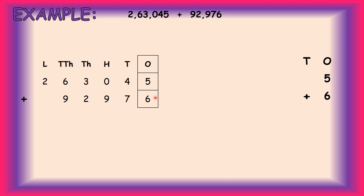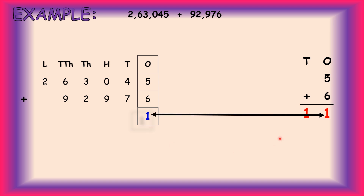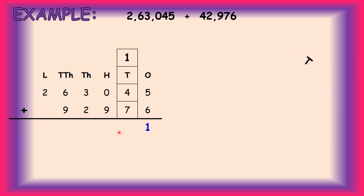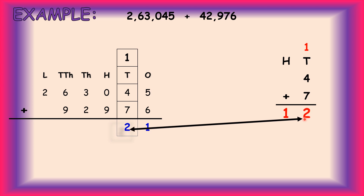Once numbers are placed, we start addition from the ones column. The digits in the ones column are 5 and 6. 5 plus 6 equals 11. Write 1 in the ones column and carry forward 1 to the tens column. Now add the tens column: digits are 4 and 7. 4 plus 7 is 11, plus carry 1 is 12. Write 2 in the tens column and carry forward 1 to the hundreds column.